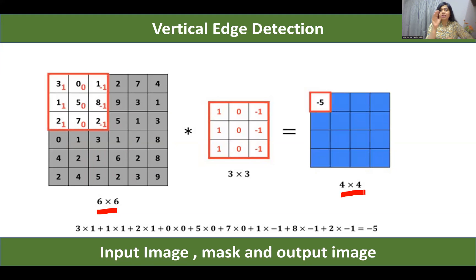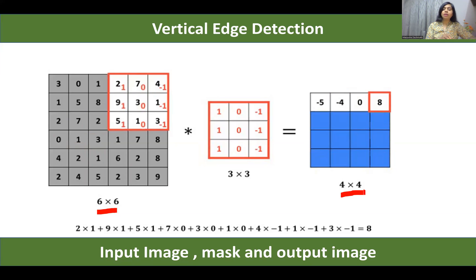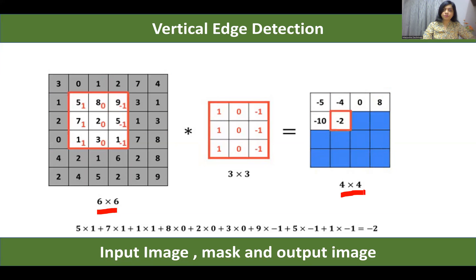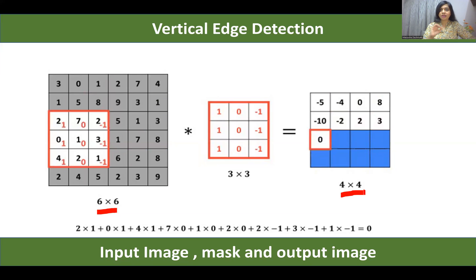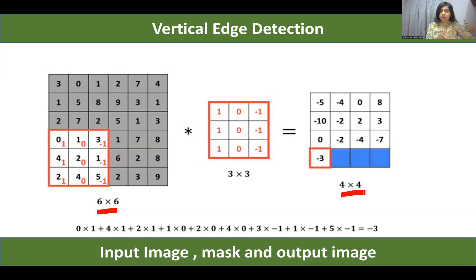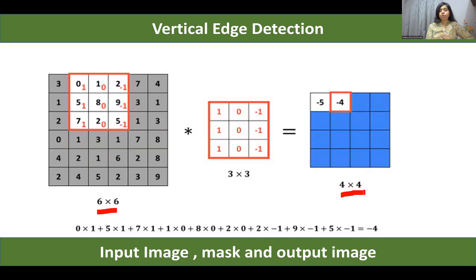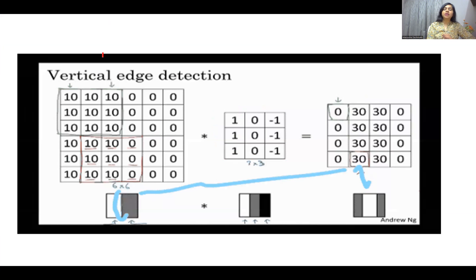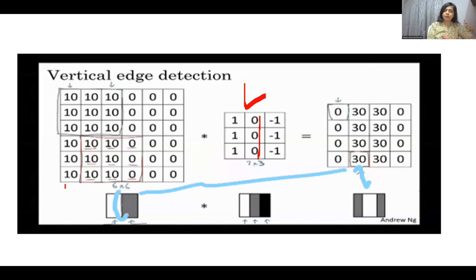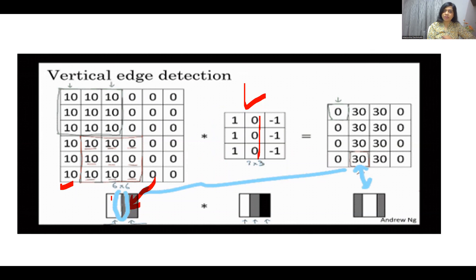We shift the mask at every position, calculate the convolution, and replace the value of the central pixel with the new value. Now for vertical edge detection, this mask is used in which at the center column there are zeros. The image here contains only two values — 0 is represented by gray and 10 is represented by white.